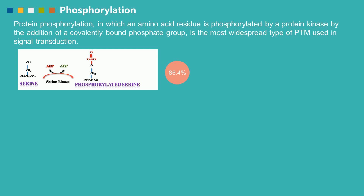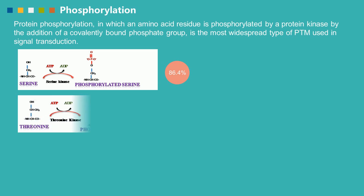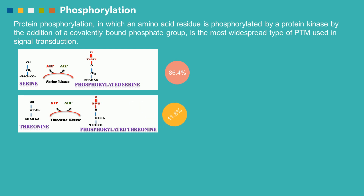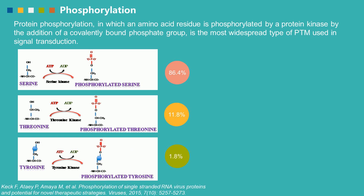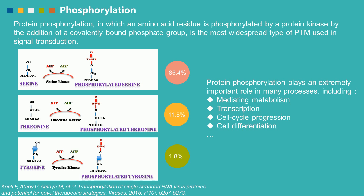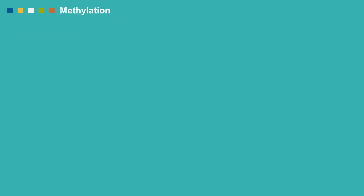In eukaryotic cells, about 86.4% of protein phosphorylation events occur on serine, while 11.8% occur on threonine, and only 1.8% occur on tyrosine residues. Protein phosphorylation plays an extremely important role in many processes, including mediating metabolism, transcription, cell cycle progression, and cell differentiation.